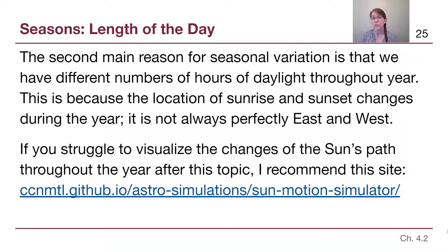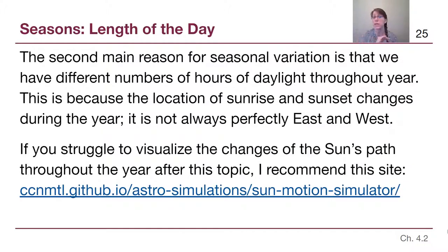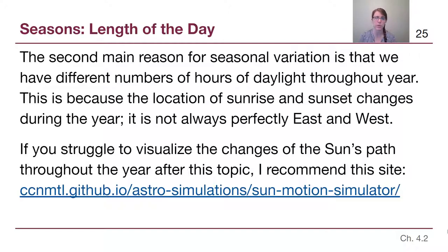The second big reason for seasonal variations is that we have actively different numbers of hours of daylight during the year, and that is because the location of sunrise and sunset changes. We simplify things to say the sun rises in the east and sets in the west, but on a compass there is a single point that is due east and a single point that is due west, and the sun only rises and sets at that location two days out of the entire year — on the spring equinox and on the fall equinox. If you struggle to visualize the changes in the sun's path through the sky, there is a clickable link in the posted slides to an interactive simulation that you can work with to better understand these changes throughout the year.